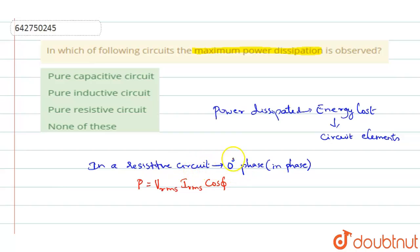Now in a purely resistor circuit, we know that phi, the phase angle, is equal to 0 degrees. So if phi is equal to 0 degrees, then cos phi will be equal to 1. If cos phi is equal to 1, then what happens to P?